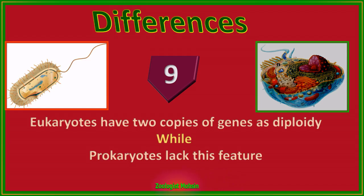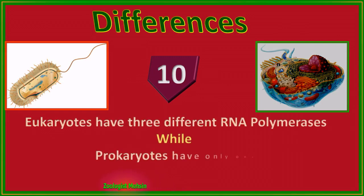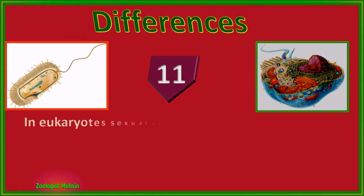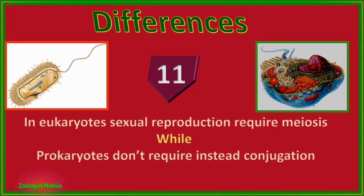Number nine: eukaryotes have two copies of genes as diploidy, while prokaryotes lack this feature. In eukaryotes, when homologous chromosomes come together, they are able to show genetic recombination. Number ten: eukaryotes have three different RNA polymerases, while prokaryotes have only one RNA polymerase.